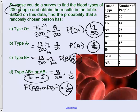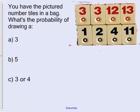All right, let's look at another one. So you have the picture number tiles in a bag. What's the probability of drawing a 3, a 5, or a 3 or 4? Let's try these three. Go ahead and I'll be back in just a second to show you the answer. Making sure that you have your probability for each of these written down. That's important to have. Don't forget it.